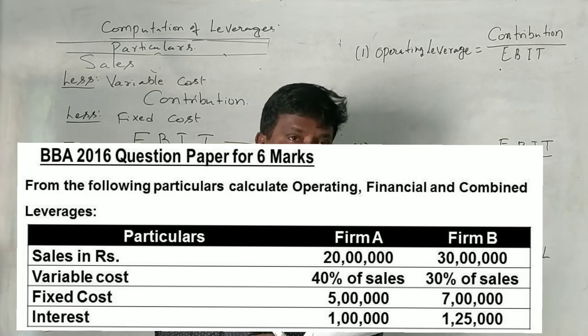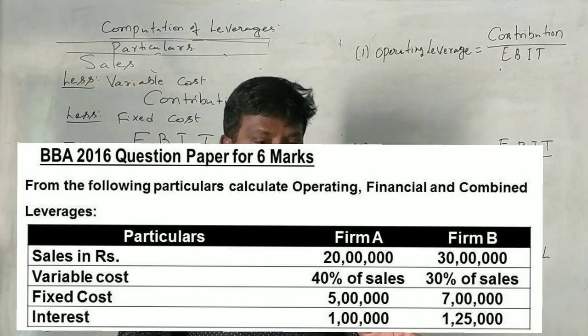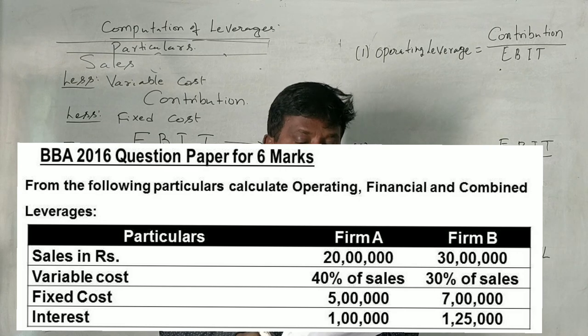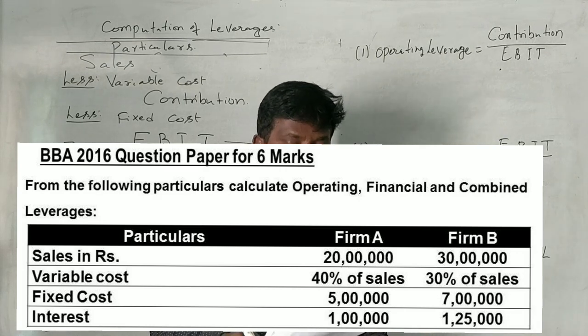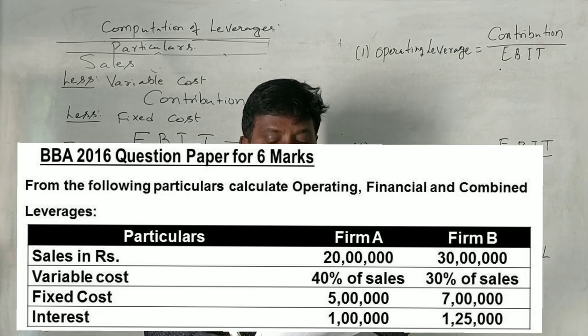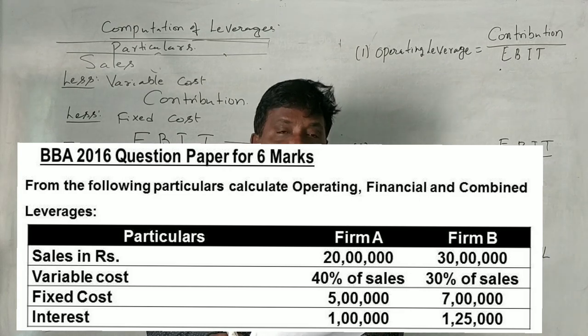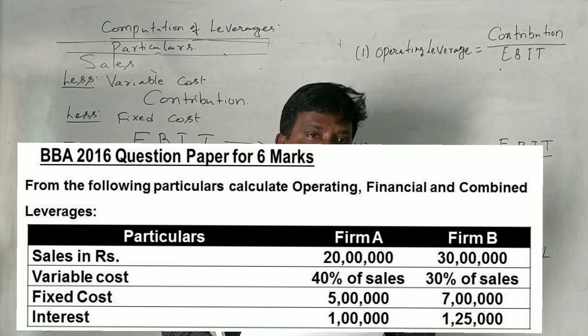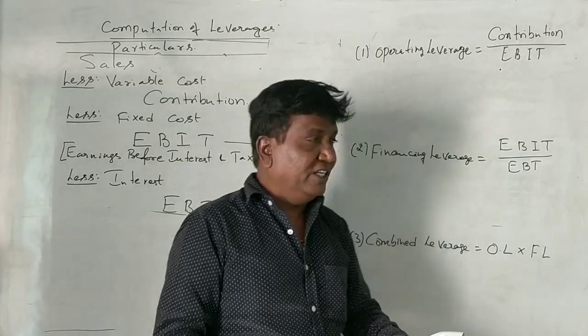Firm A, firm B. Sales 20 lakhs, 30 lakhs. Variable cost 40% of sales, 30% of sales. Fixed cost 5 lakhs and 7 lakhs. Interest 1 lakh and 1 lakh 25,000. And interpret the result for the firms. That is what he has given.